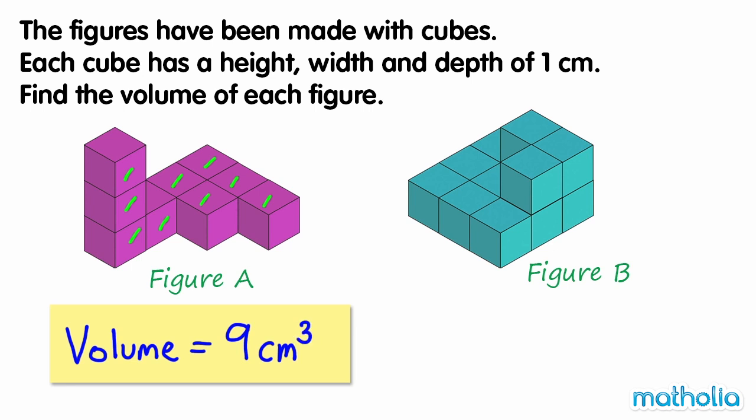Figure B is made of nine cubes on the bottom and three on top to give twelve cubes. Its volume is twelve cubic centimeters.